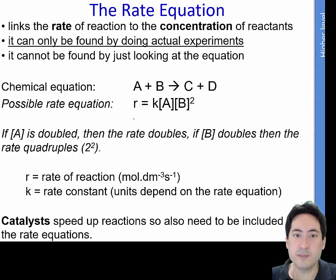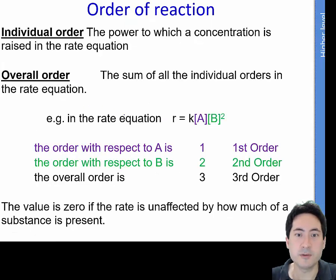So the rate equation is this mathematical formula that we determine only experimentally, and that allows us to work out how fast a reaction will occur. So we have different terminology for that. For A, the reaction is first order. The reaction is first order with respect to A.